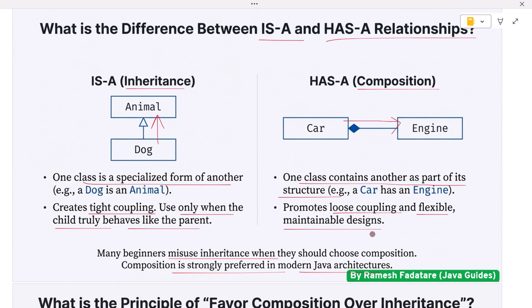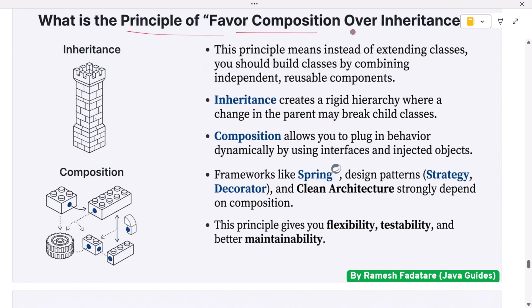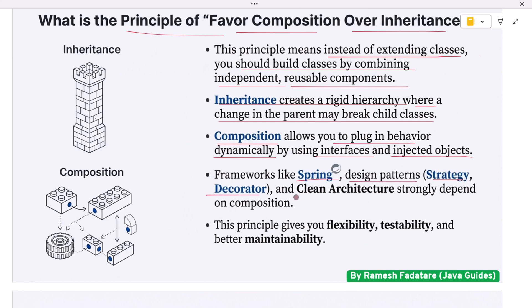What is the principle of 'favor composition over inheritance'? This principle means instead of extending classes and inheriting their behavior, you should build classes by combining independent, reusable components. Inheritance creates a rigid hierarchy where child classes depend heavily on parent behavior, and any change in the parent may break child classes. Composition allows you to plug in behavior dynamically using interfaces and injected objects. Frameworks like Spring and design patterns like Strategy, Decorator, and Adapter strongly depend on composition. This principle gives you flexibility, testability, and better maintainability.